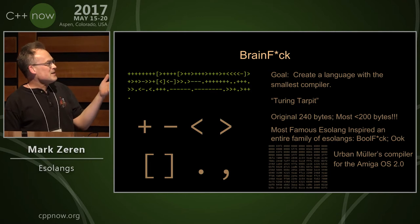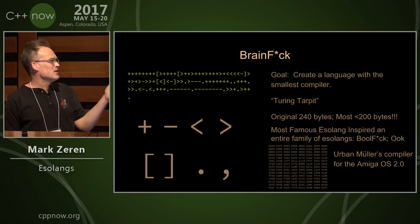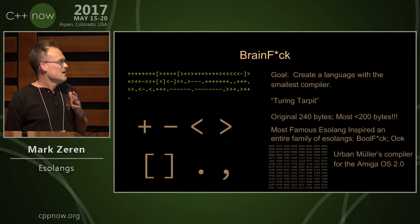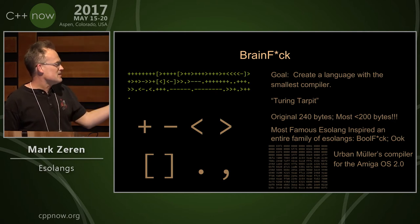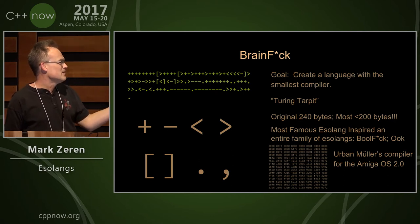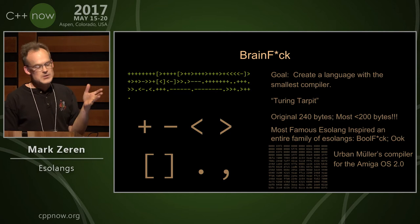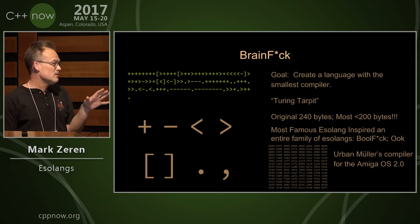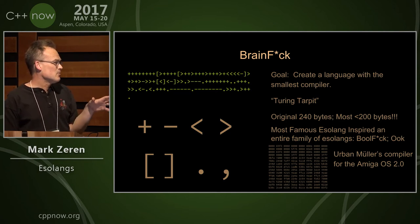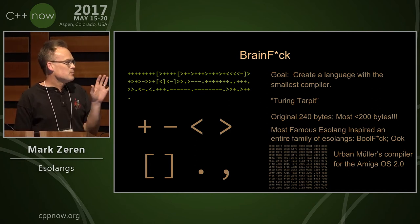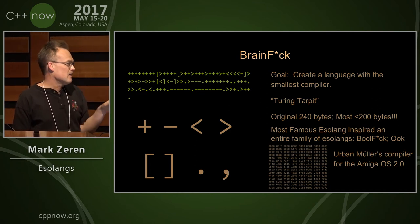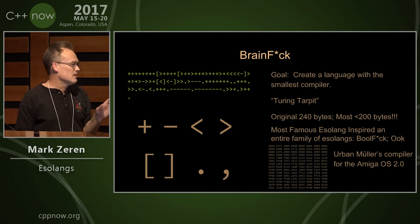Probably the best known one is something that they refer to in middle school as BF, and you can see Hello World on the left, and the instruction set down below it. The goal here was to create a language that was super easy to compile — the first compiler was 240 bytes, and now most compilers are less than 200 bytes. It's probably the most famous esolang and has spawned an entire family of esolangs.